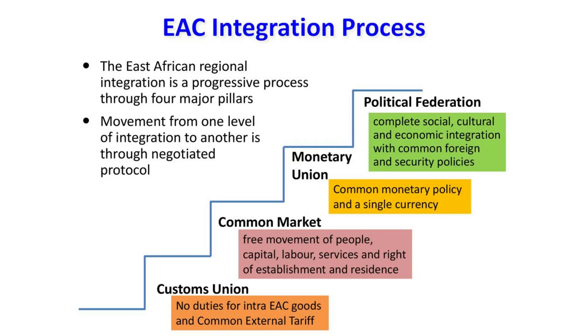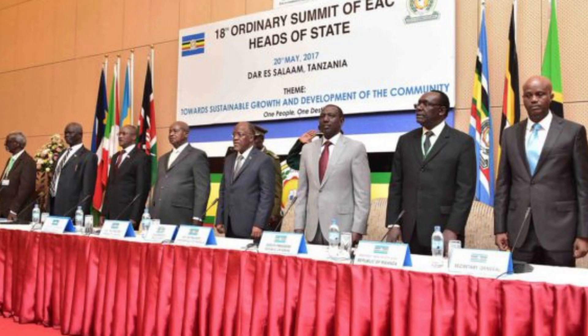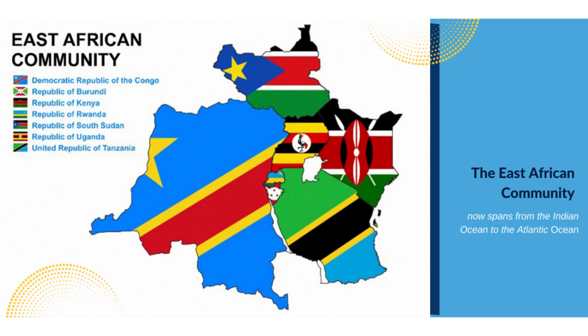The EAC integration process has four pillars namely the customs union, common market and monetary union, and the ultimate goal, the political federation. In May 2017, the EAC heads of state adopted a political confederation as a transitional model to the political federation.